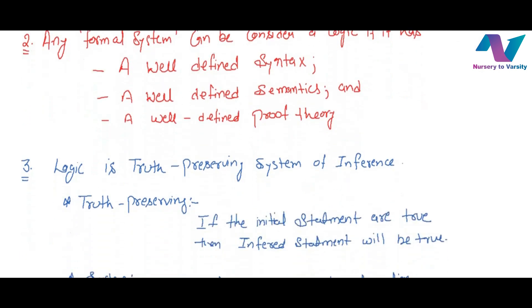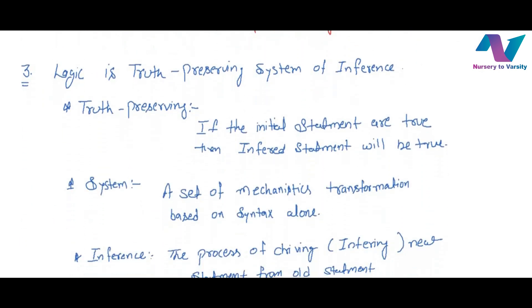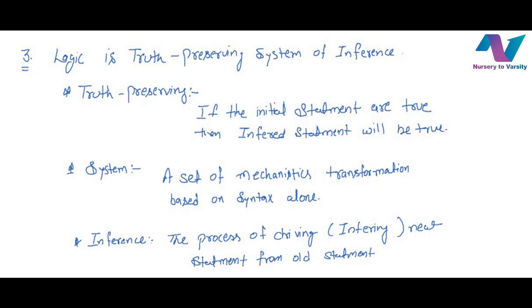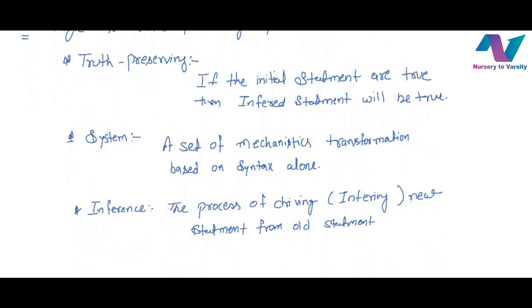And if we consider our third definition, logic is a truth preserving system. In this, if initial statements are true, then inferred statement should be true. If we talk about system, system is a set of transformation based on the syntax. And if we talk about inference, inference is a process from where we are deriving our new statement from the given old statement. So these are the three basic definitions about logic.